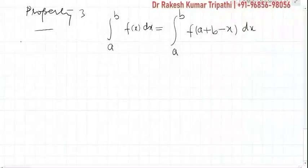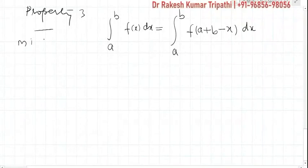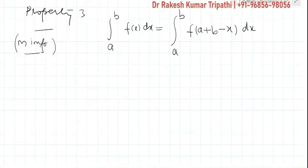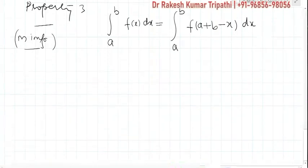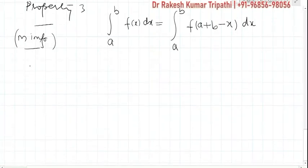The most important property of the definite integral is: integral from a to b of f(x) dx equals integral from a to b of f(a + b − x) dx. Let's try to prove this property.